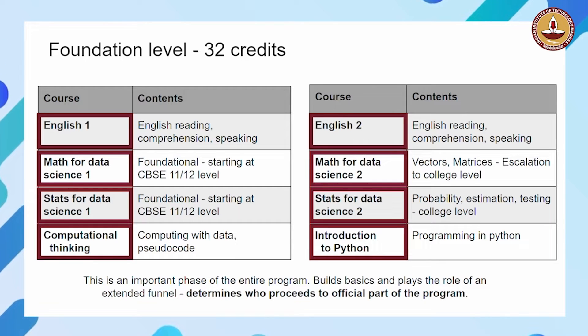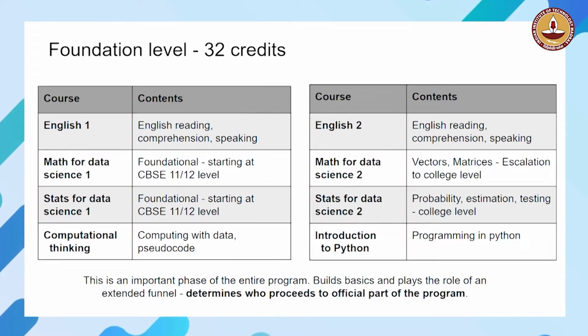This is a very, very crucial phase of the program. This builds the basics. We do not expect that you have math or physics or science in the 12th standard, but we build what you need for data science in the foundation period. It also determines who proceeds to the more demanding diploma and degree parts of the program. So this also acts as a funnel — people who cannot cope with this foundational part have to leave the program.